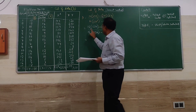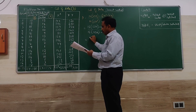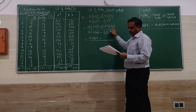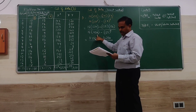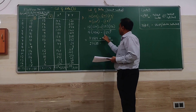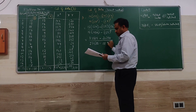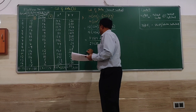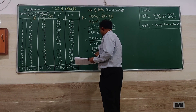Now we simplify: 15 into 1,571 minus 135 into 150, all divided by 15 into 1,839 minus 135 squared. The numerator: 15 × 1,571 = 23,565, minus 135 × 150 = 20,250. The denominator: 15 × 1,839 = 27,585, minus 135 × 135 = 18,225. Further simplifying, numerator gives 3,315 and denominator gives 9,360. So beta equals 3,315 divided by 9,360, which equals approximately 0.354.